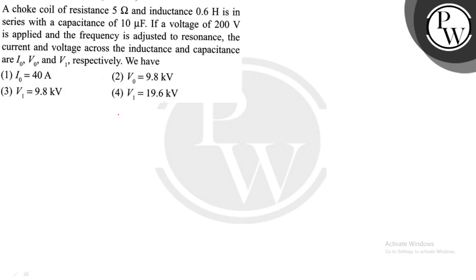Hello, we have a question. The question states that a choke coil of resistance 5 ohm and inductance 0.6 henry is in series with a capacitance of 10 microfarad. If voltage of 200 volt is applied and the frequency adjusted to resonance, the current and voltage across the inductance and the capacitance are I₀, V₀ and V₁.